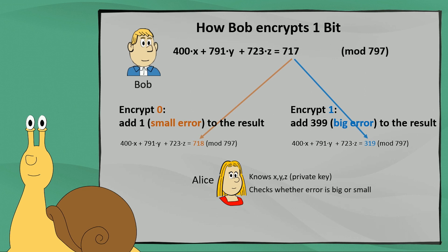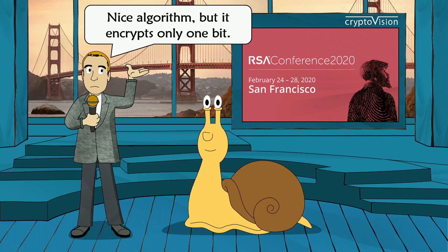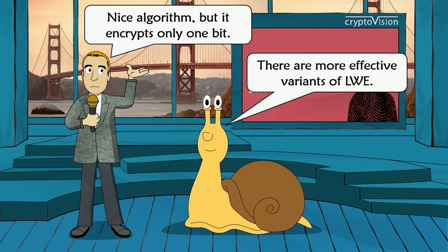Alice, who knows x, y, and z, can easily check if the error is big or small: if small, it's a zero; if big, it's a one. For an attacker, this is very difficult to decrypt because he needs to invert the learning with errors trapdoor function. This is a lot of work for just encrypting one bit, but there are more efficient variants of LWE. The general concept should be clear now, and it's possible to make it more efficient.